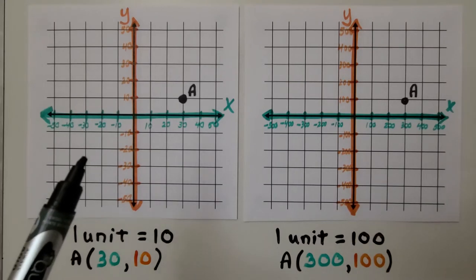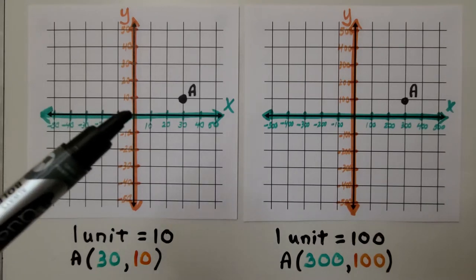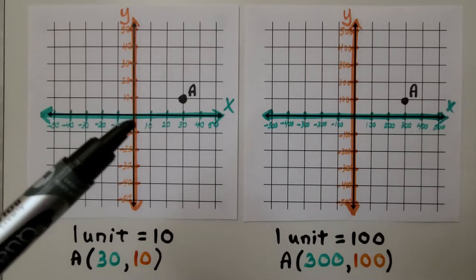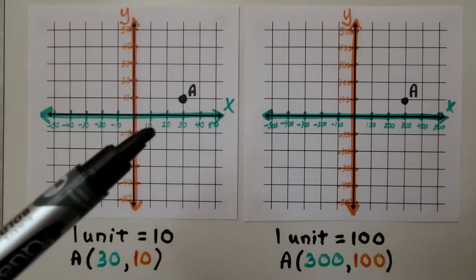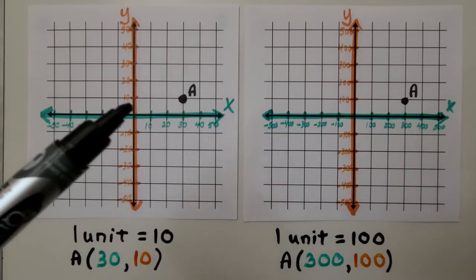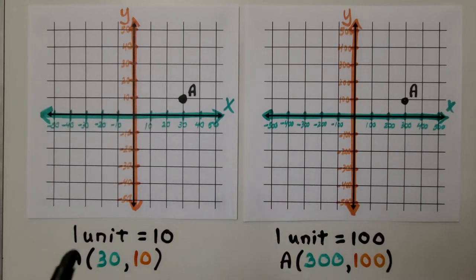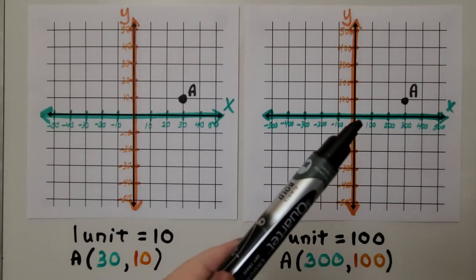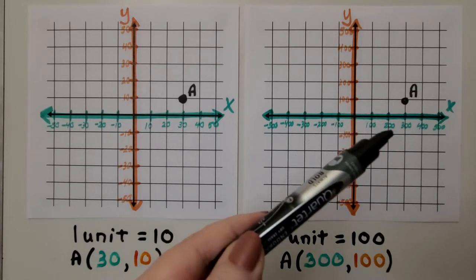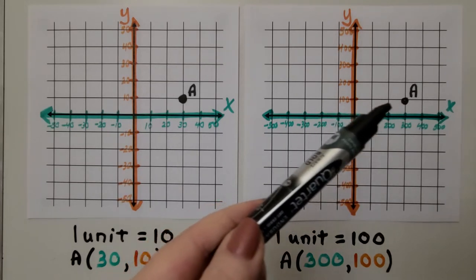On this first coordinate plane, 1 unit is equal to 10. Point A is at 30 for x and 10 for y. This graph has 1 unit is equal to 100. Point A is at 300 for x and 100 for y.